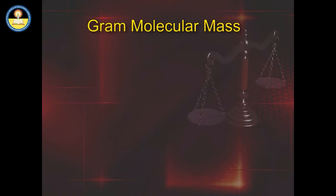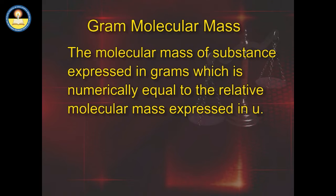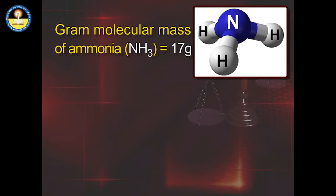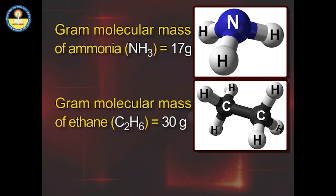Let us now learn about gram molecular mass. The gram molecular mass of a substance is defined as the molecular mass of the substance expressed in grams, which is numerically equal to the relative molecular mass expressed in U. For example, gram molecular mass of ammonia NH₃ is 17 grams, and gram molecular mass of ethane C₂H₆ is 30 grams.